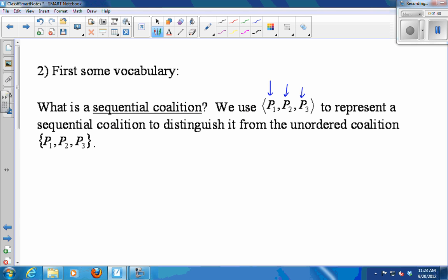So P1, P2, P3 would be different from P2, P3, P1. In our previous method, the order didn't matter at all. A team was a team was a team, right? Three players put together, they make a team, the order didn't matter. In this method, the order is going to matter. So we call them sequential coalitions.